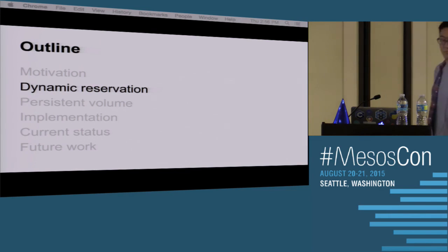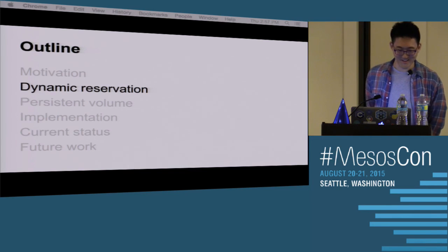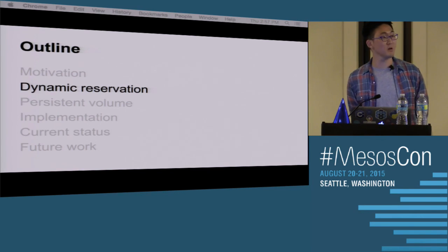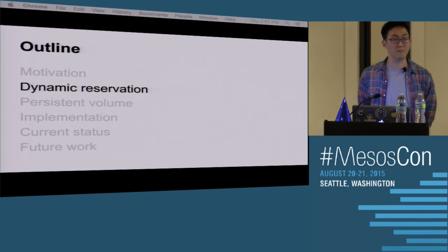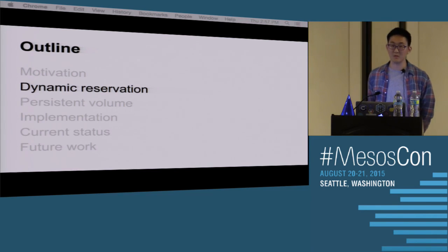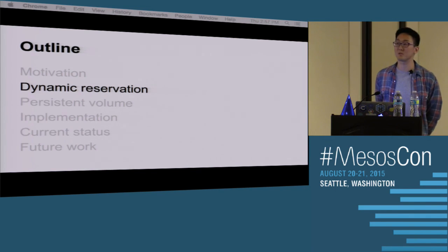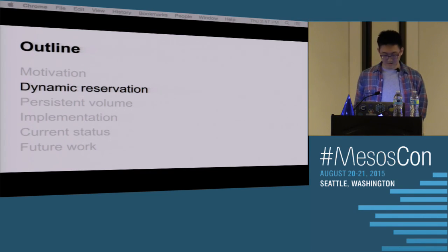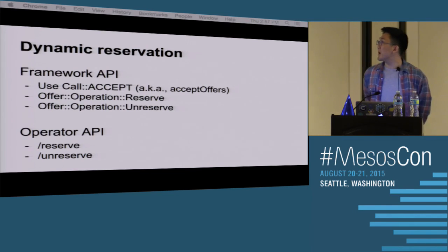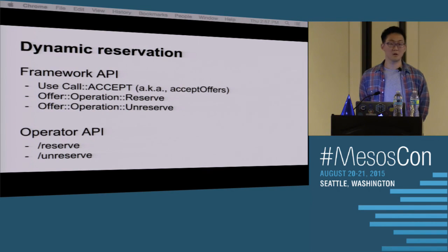Hi, I'm Michael Park. I worked on dynamic reservations. I'm going to take you through the details of dynamic reservation, and G is going to come back and cover persistent volumes. Many of the mechanisms I'll cover for dynamic reservation also apply to persistent volume, so when G goes back to persistent volumes, he'll be flying through those slides because I'll have already covered it. There are two APIs — one for the framework and the other for operators. The framework goes through the offer cycle, whereas operators are provided with two master endpoints.